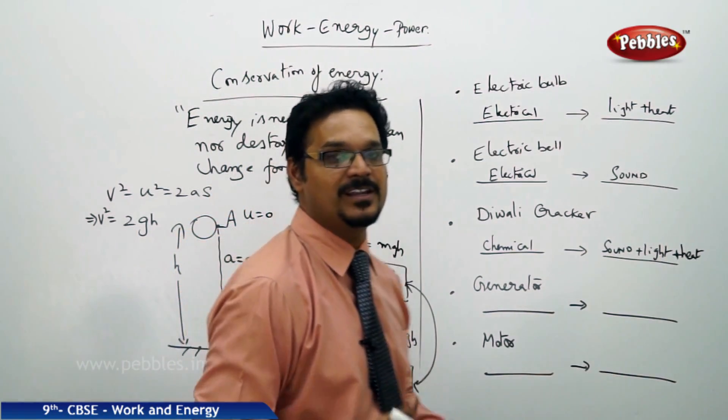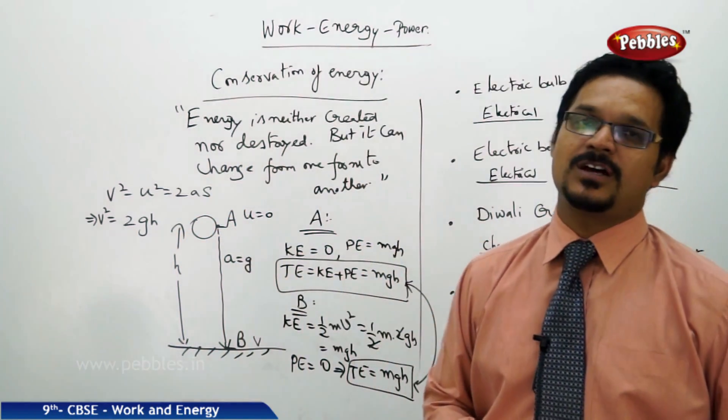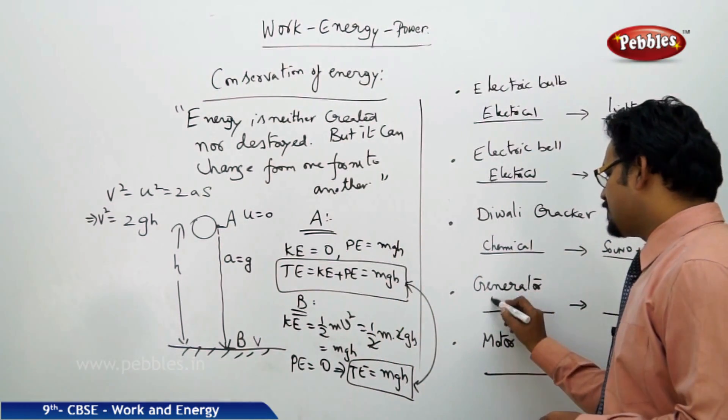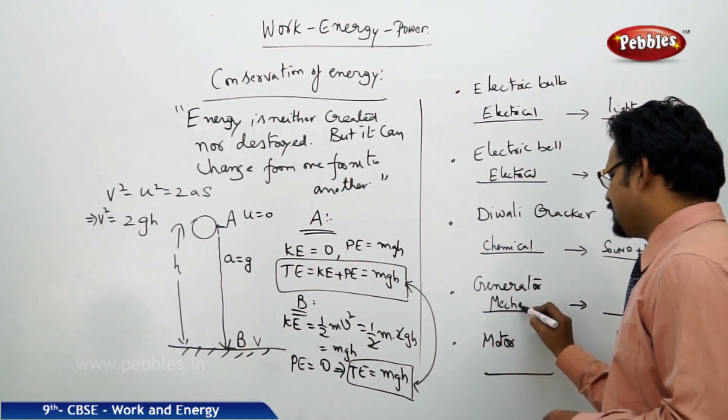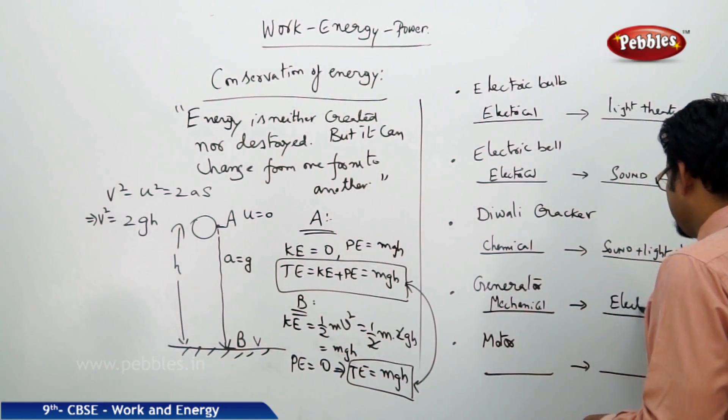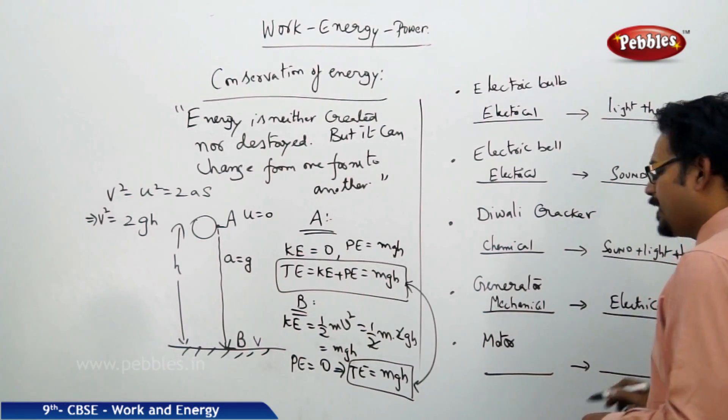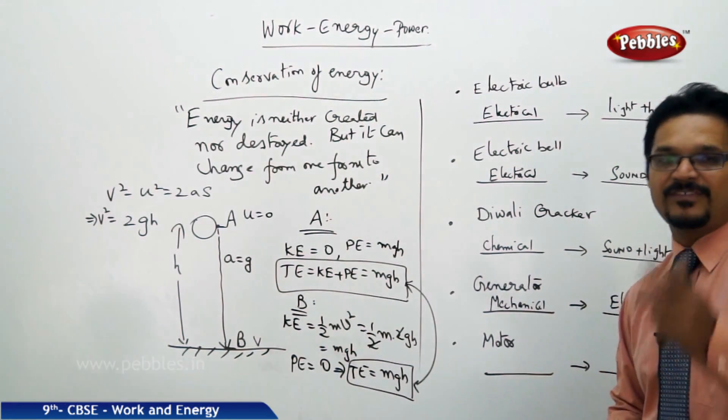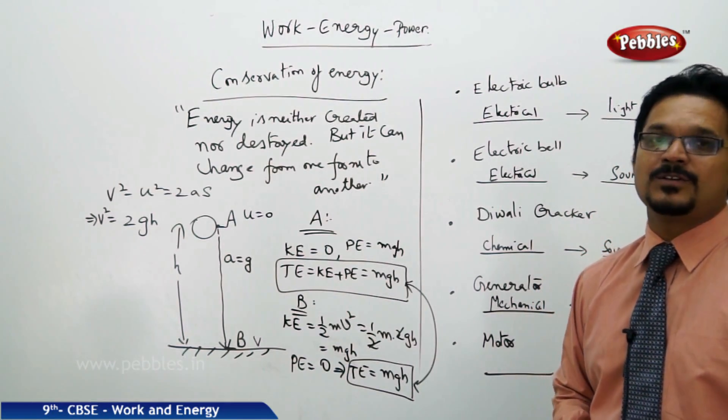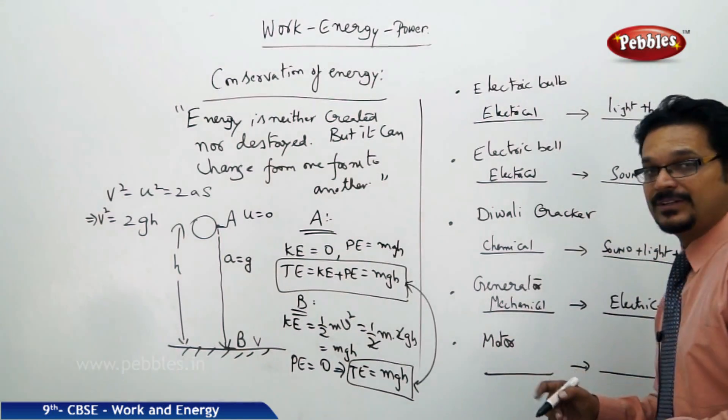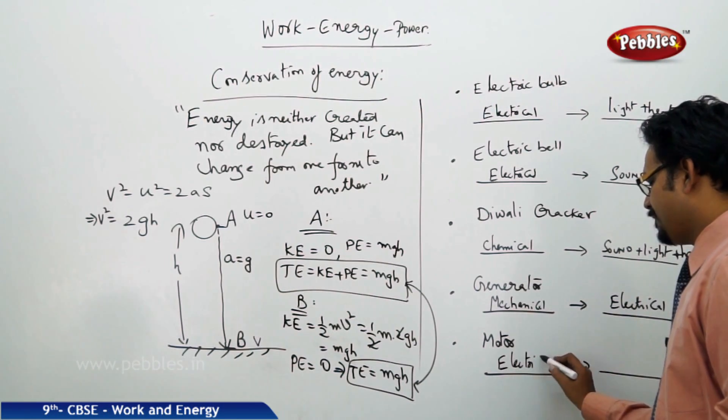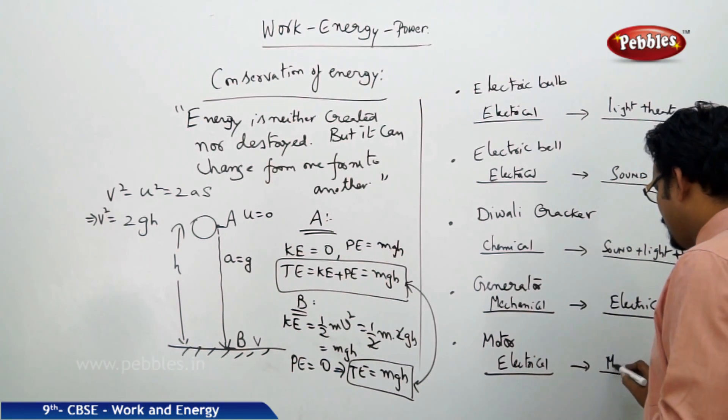Generators: AC generators are the ones which generate electricity. How is it possible? They convert mechanical energy to electrical energy.